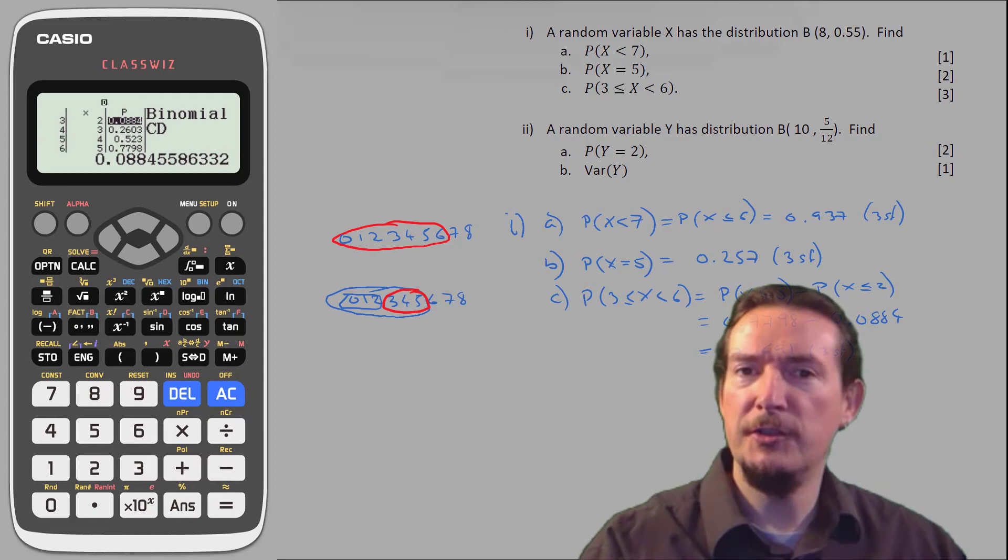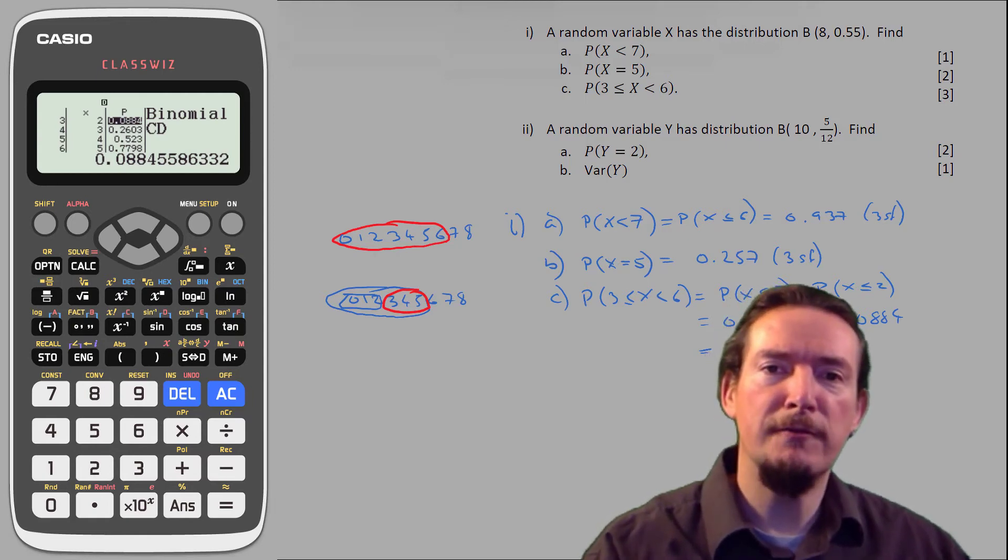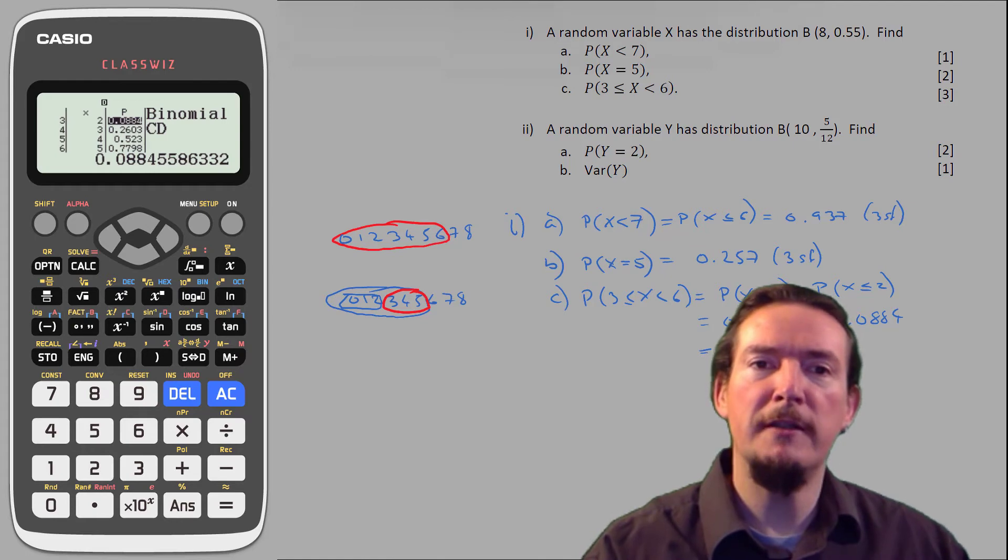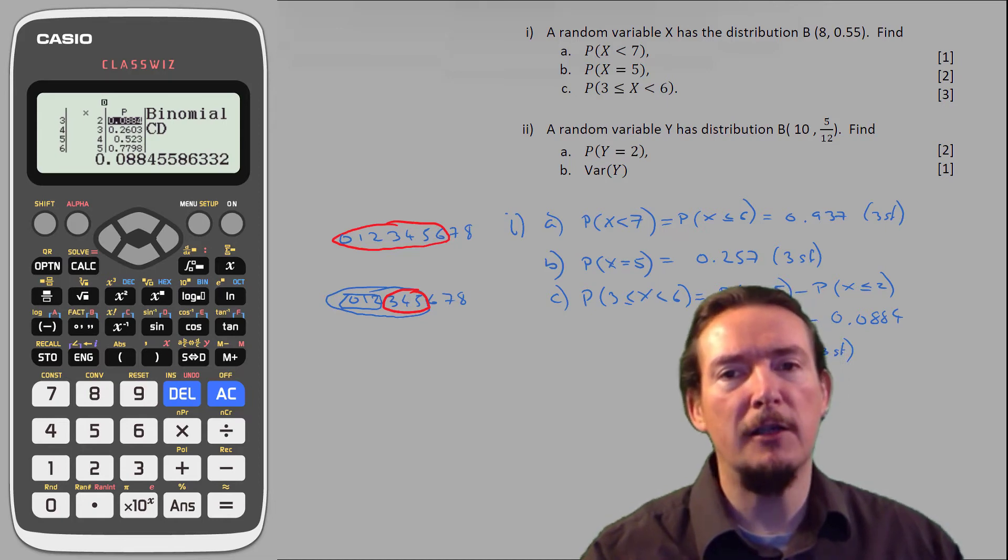Onto part 2, which concerns itself with a new random variable y, which also happens to follow a binomial distribution, but with different parameters. We only require a single probability this time, so there's no advantage in generating the whole table of results like we did in the first part of this question.